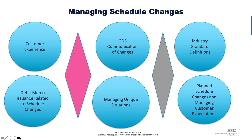Another area we're looking at is standard definitions around different processes within the irregular operation process. The reason is that airlines have multiple ways to define things and agencies are tasked to figure that out based on the airline whose ticket they're looking at. We're going to try to add some clarity to some of these definitions. And then we're also going to work on how to manage customer expectations and provide them more information rather than keeping them in the dark.